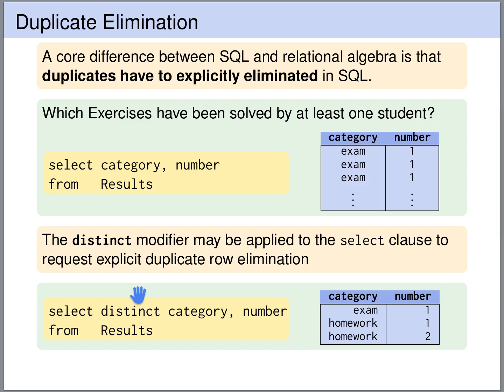We then get a table where every row appears only once: we have xm1, homework1, and homework2.